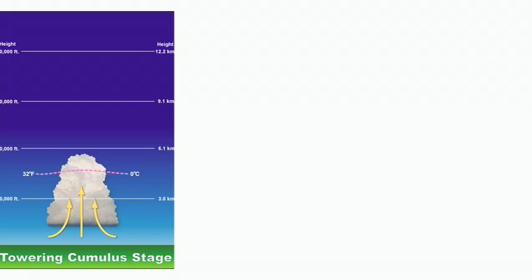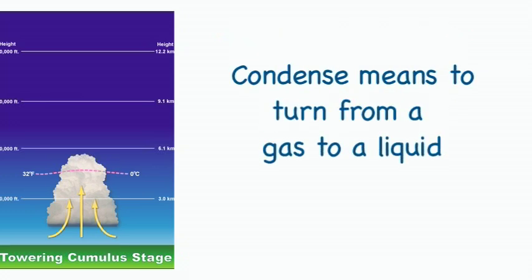When warm air rises, it expands and cools. Cool air can't hold as much water vapor as warm air. So some of the vapor condenses onto tiny pieces of dust that are floating in the air, forming a tiny droplet around each dust particle. When billions of these droplets come together, they become a visible cloud.